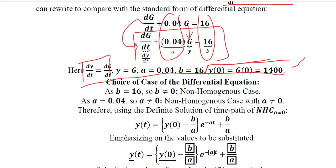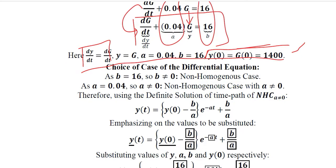Now we choose the case that we are dealing with. Primarily we consider the value of b, and b is not equal to 0, which is non-homogeneous case. And then we have a which is also not 0, so we have a non-homogeneous case with a ≠ 0.